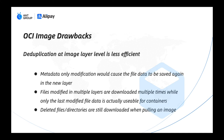In addition, the duplication at image layer level is less efficient. For example, file metadata changes will cause the entire file data to be saved again to the new layer. And if the file changes many times, the container will only use the latest data, but the history versions will be pulled down too. In addition, deleted files will also be pulled, which wastes unnecessary storage and network bandwidth.